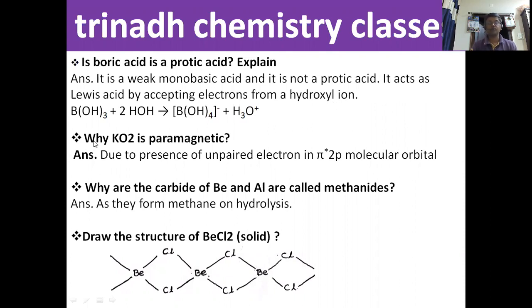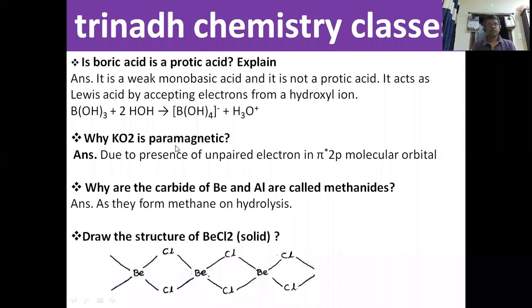The next question: why is KO2 paramagnetic? This is a question from S-block elements, Group 1 elements. KO2 is paramagnetic due to the presence of unpaired electrons in the anti-bonding molecular orbitals — specifically the π* 2p (πx* 2px or πy* 2py) molecular orbitals.